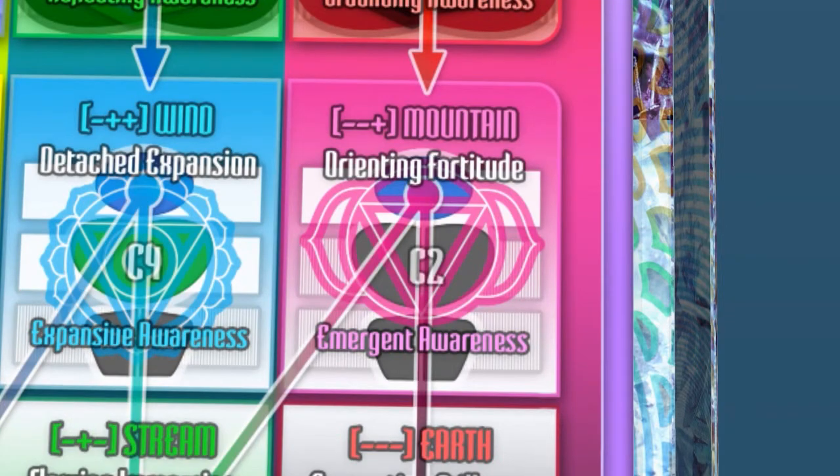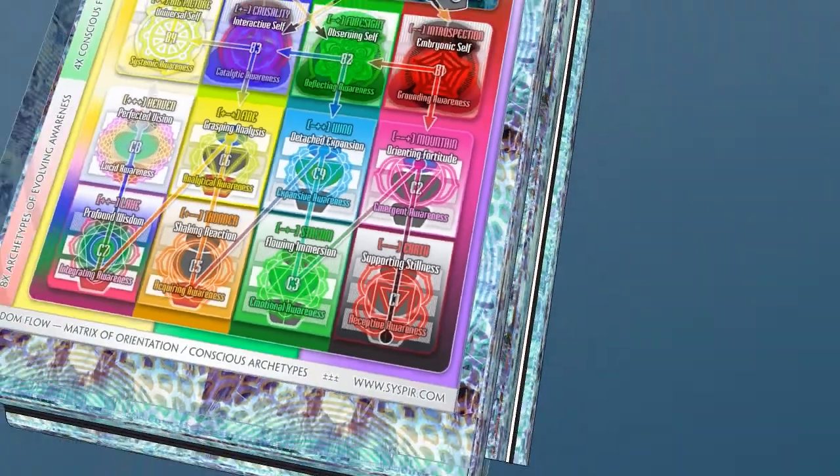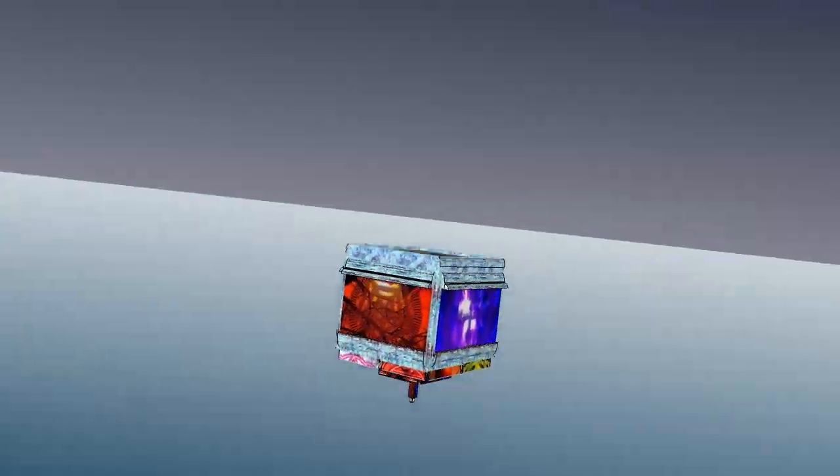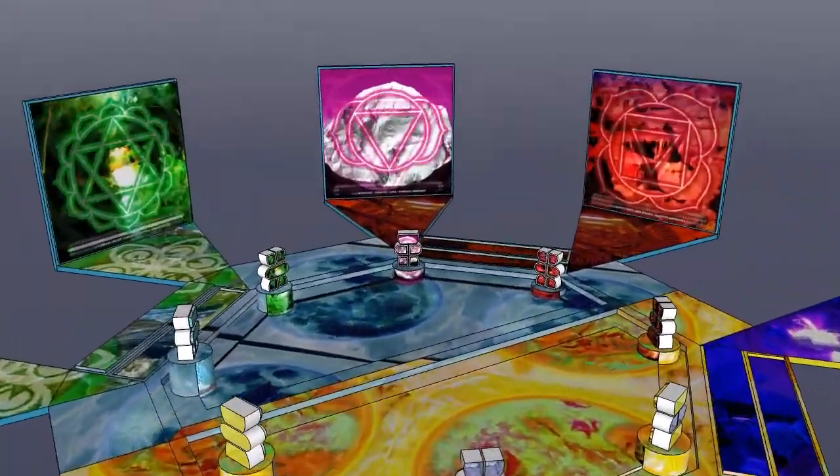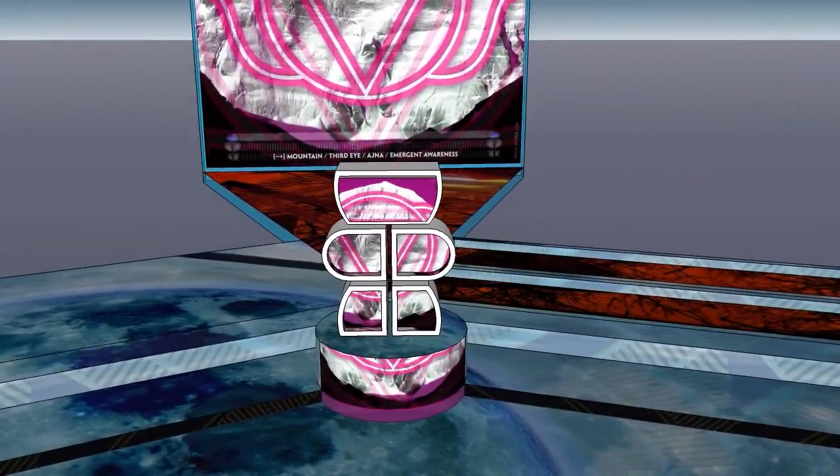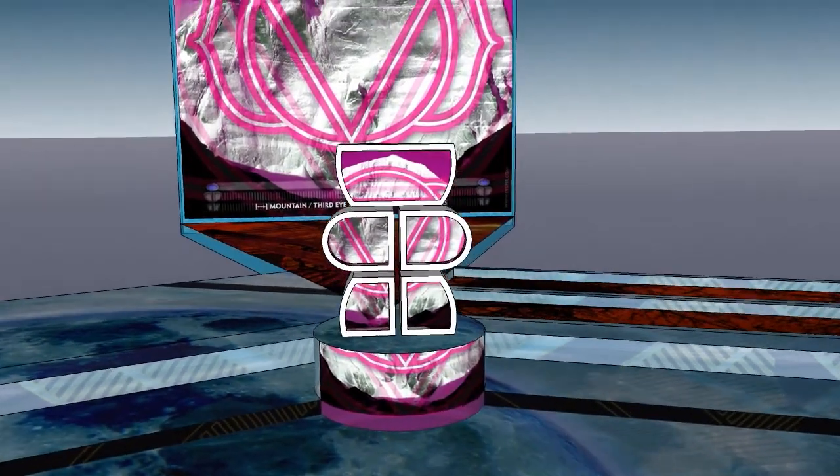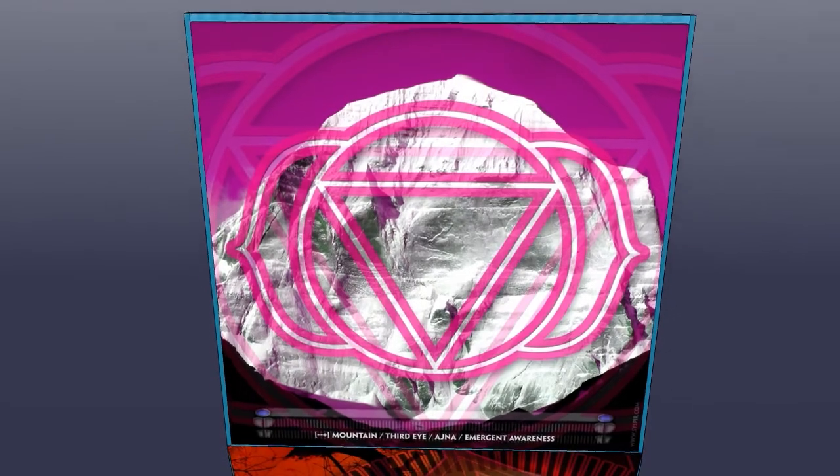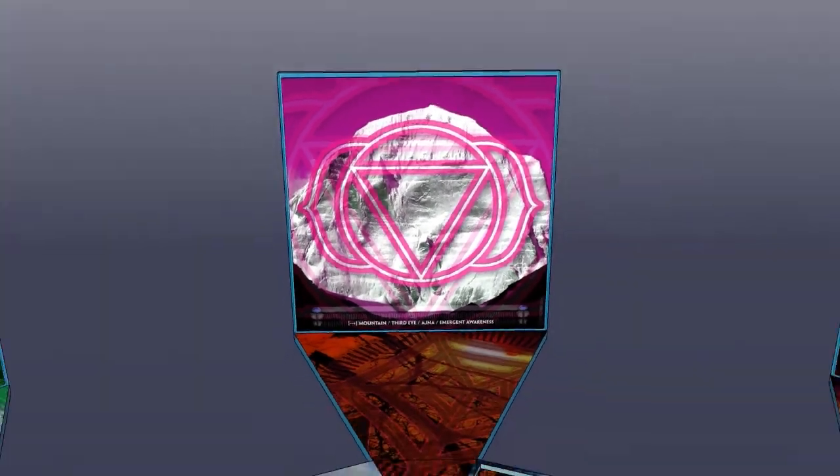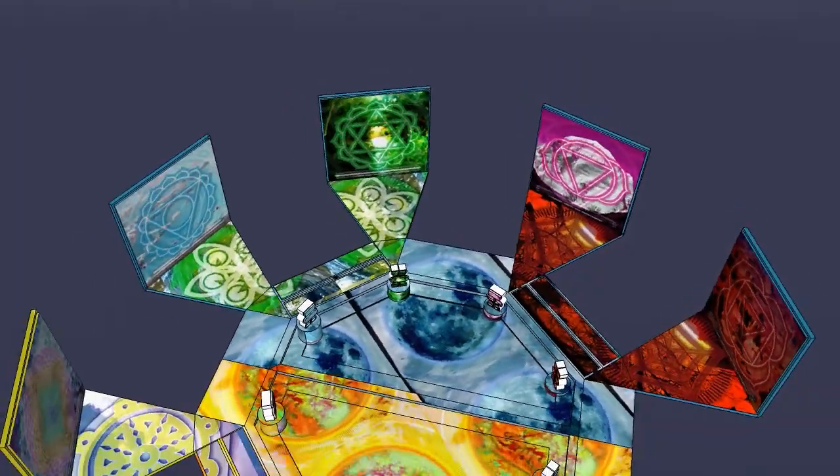Mountain: Orienting Fortitude, Emergent Awareness. Minus, Minus, Plus. Body Static, Heart Static, Intellect Dynamic. Third Eye: Education, Emergence, Insight and Orientation. Awareness is established in the emergent vision of the mountain.